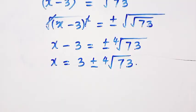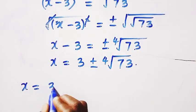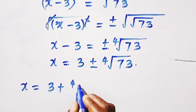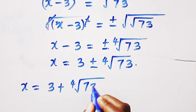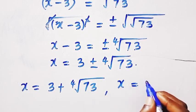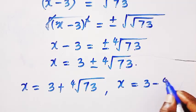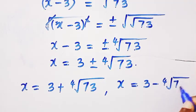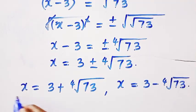And at this point, we have 2 values of x. x1 is 3 plus the 4th root of 73. And we have another x, which is 3 minus the 4th root of 73. Note that all these values, they are greater than 3.